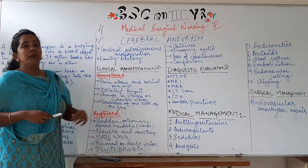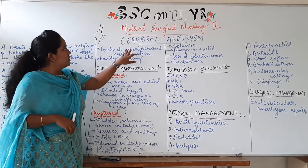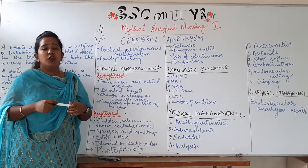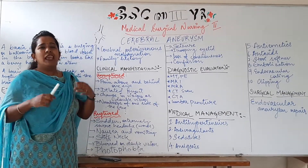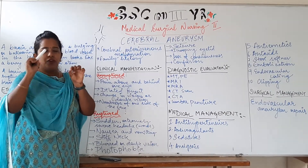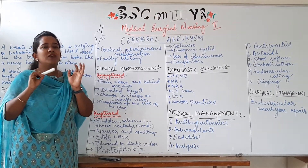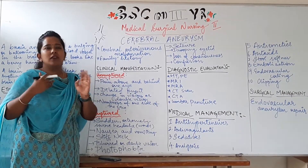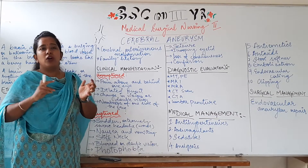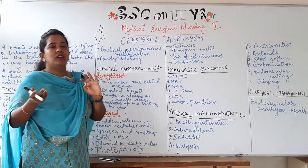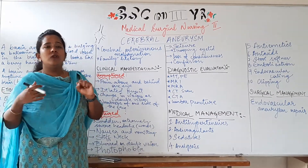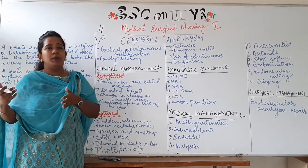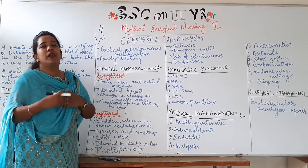Apart from that, there can be cerebral arteriovenous malformation, also called arteriovenous fistula — an abnormal connection between the artery and vein. This causes mixing of oxygenated and deoxygenated blood and excessive pressure, and due to this interchangeable blood flow, the baby or when the baby grows into an adult can develop an aneurysm.